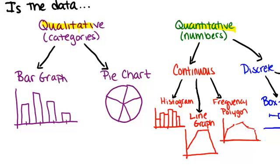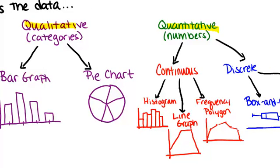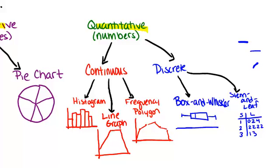If it's qualitative, you only have two choices really, a bar graph or a pie chart. And it's just based on what you prefer and maybe if you want to compare multiple things. If the data is quantitative, you have more choices. You have to decide if it's continuous or discrete.